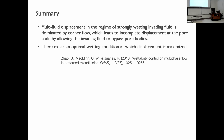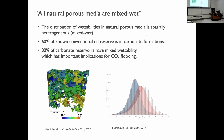To summarize the first story: fluid-fluid displacement in the regime of a strongly wetting invading fluid is dominated by corner flow, which leads to incomplete displacement at the pore scale by allowing the invading fluid to bypass the pore bodies. There exists an optimal wetting condition at which displacement is maximized. Importantly, no natural porous media — especially underground — has just a single contact angle; all natural porous media are mixed wet, with spatially heterogeneous wettability.